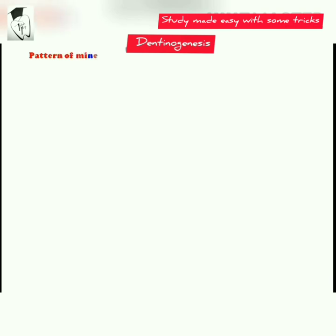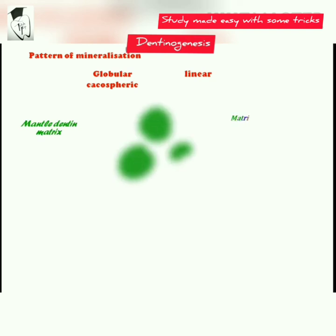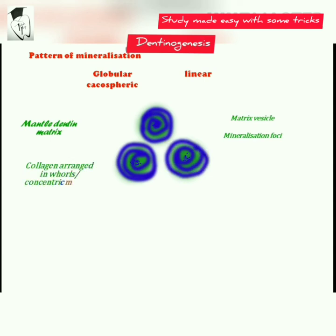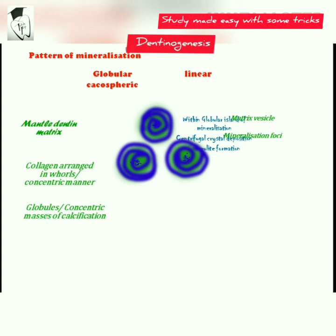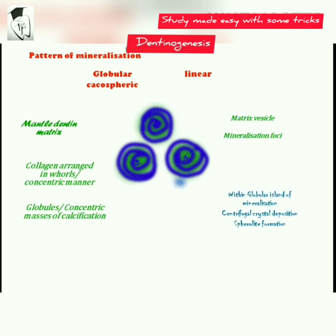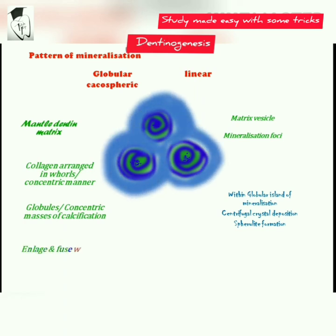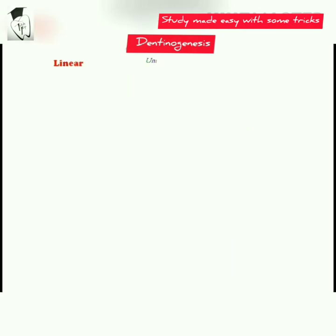There are two mineralization patterns: globular and linear. The globular pattern, also called the calcospheric pattern, occurs in mantle dentine where matrix vesicles give rise to mineralization foci. Collagen may be arranged in walls or concentric rings within globular islands of mineralization. Crystal deposition appears to take place radially from a common center, called spherulite formation, which is the first site of calcification. This results in globules or concentric masses of calcification that may enlarge and fuse with adjacent globules — hence mantle dentine has globular dentine.